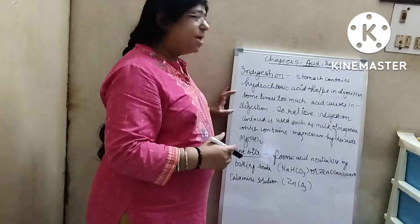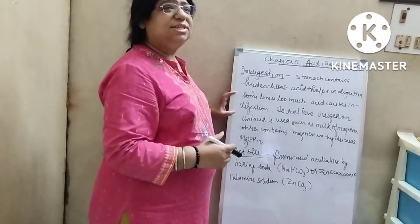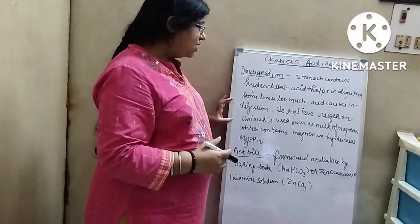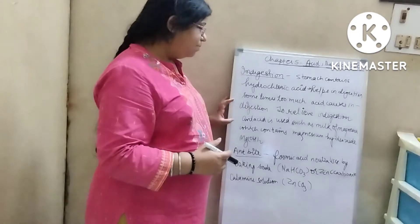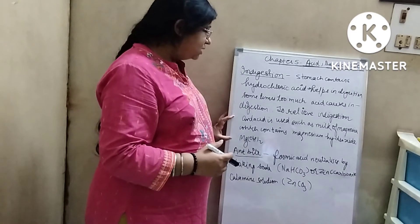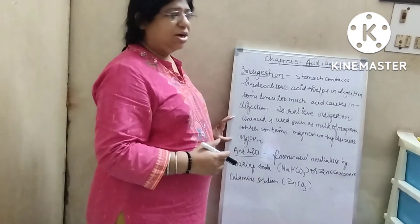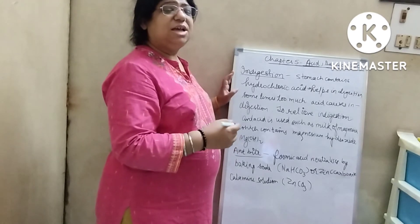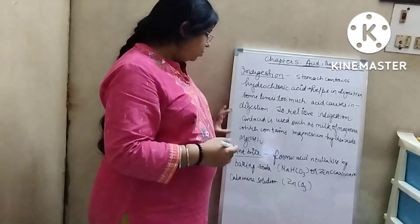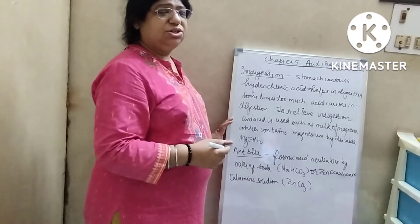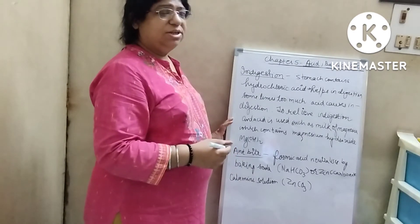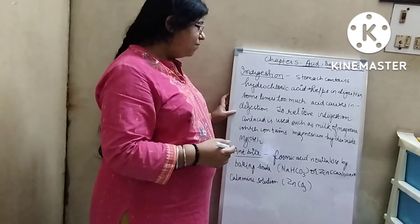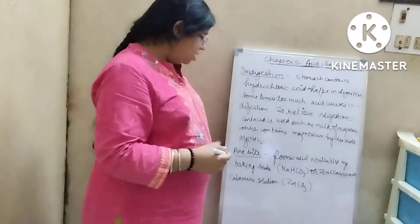So milk of magnesia is given as a treatment — that is known as magnesium hydroxide. The acid which is formed, that is hydrochloric acid, is neutralized by Mg(OH)₂, that is magnesium hydroxide or milk of magnesia.